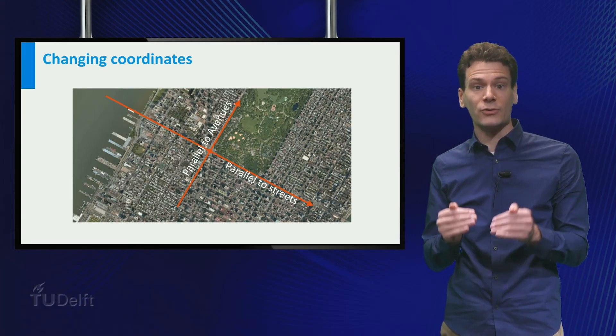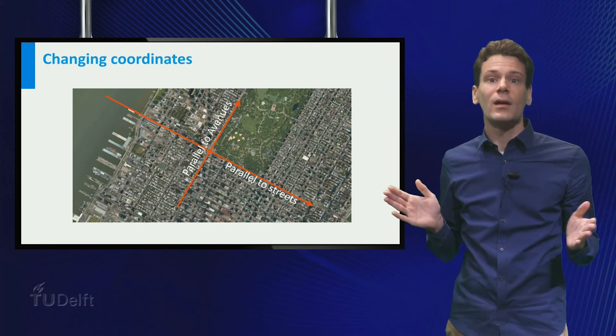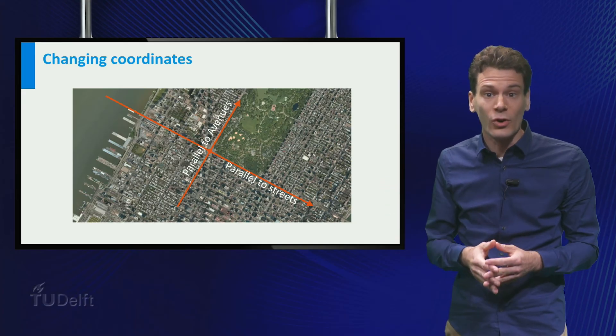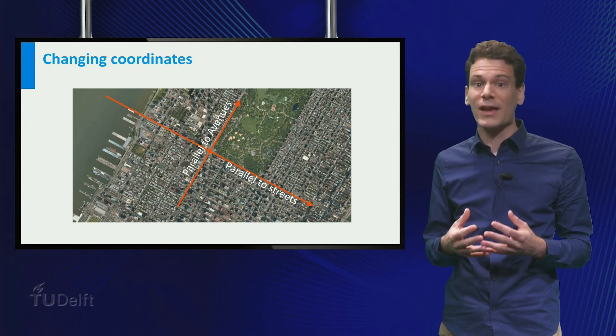One axis parallel to the streets, one parallel to the avenues. Most people giving directions in New York will use this streets and avenues coordinate system to describe how to get from A to B.